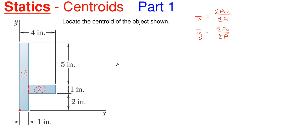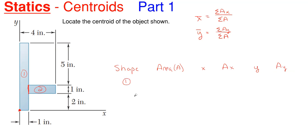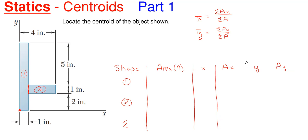You're going to have a few columns: first will be your shape number, then your area A, then your individual X centroids for your individual shapes, then A times those individual X centroids, then your vertical Y individual centroids, and then A times those Y values. Depending on how many shapes you have, that's how many rows you'll have plus an additional summation row.